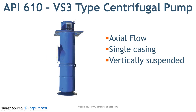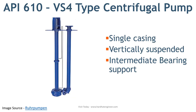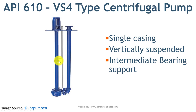The next is VS4 type pump. This type of pump has a separate discharge column and a volute casing design. The vertically suspended shaft can be supported through intermediate bearings. The discharge is separate from the pump suspended column, and bearing housings are visible along the vertically suspended shaft.